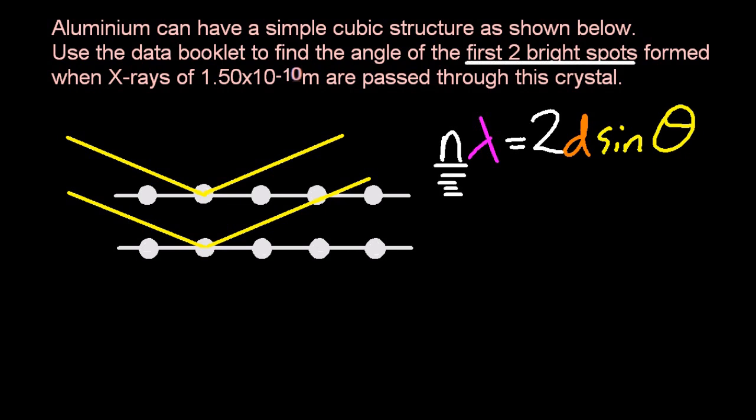First two bright spots - that's n equals 1 and n equals 2. Lambda is wavelength, and there's the length there in meters. You may have to convert to get to meters, but you need meters.